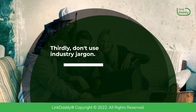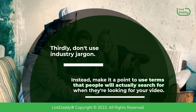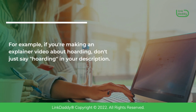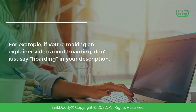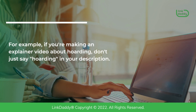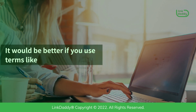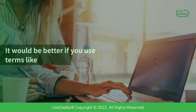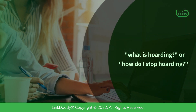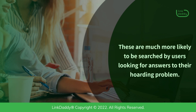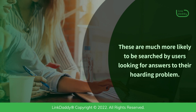Thirdly, don't use industry jargon. Instead, make it a point to use terms that people will actually search for when they're looking for your video. For example, if you're making an explainer video about hoarding, don't just say hoarding in your description. It would be better if you use terms like what is hoarding or how do I stop hoarding. These are much more likely to be searched by users looking for answers to their hoarding problem.